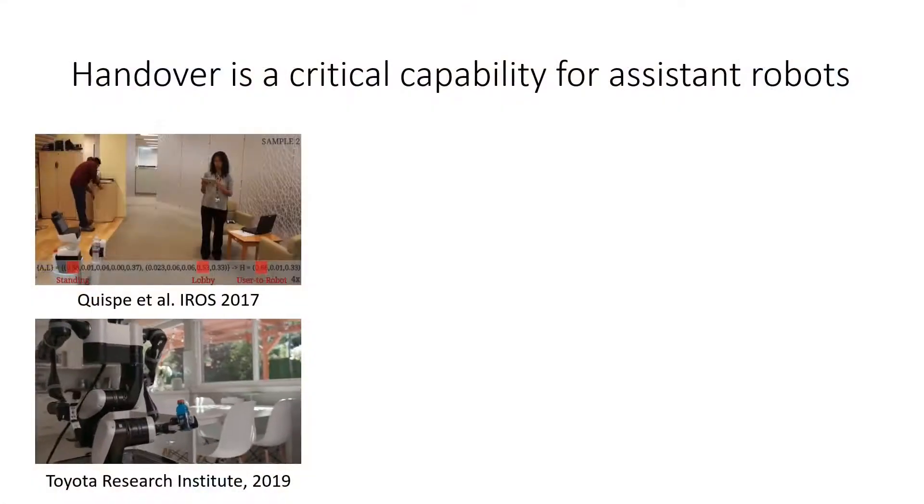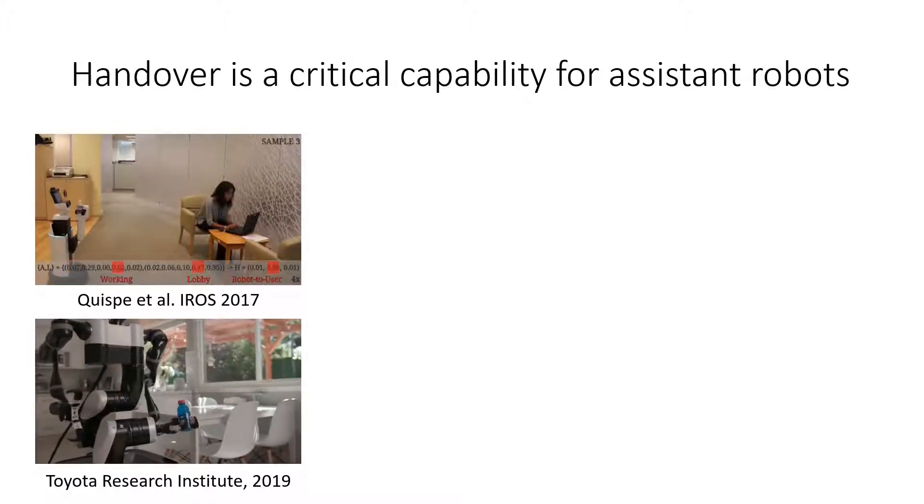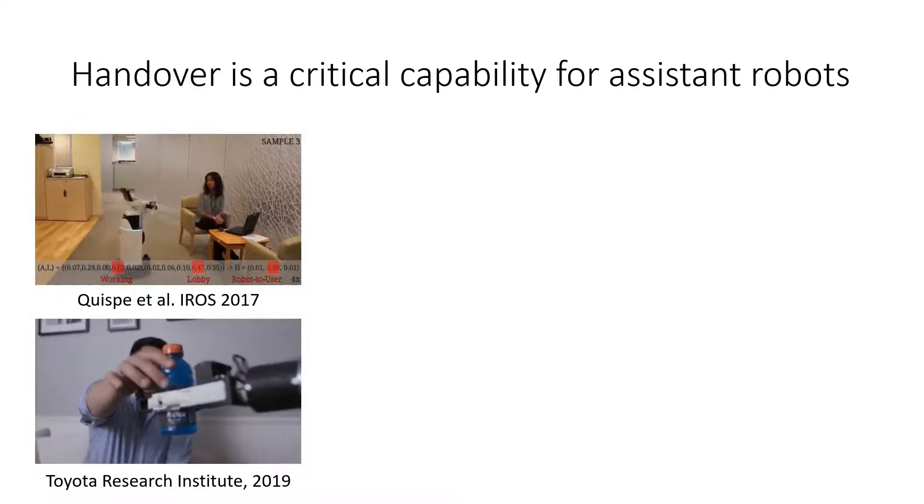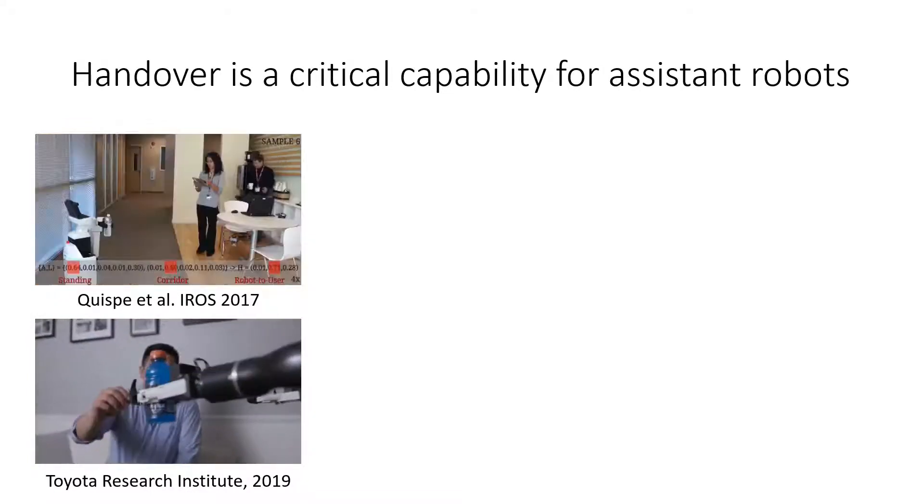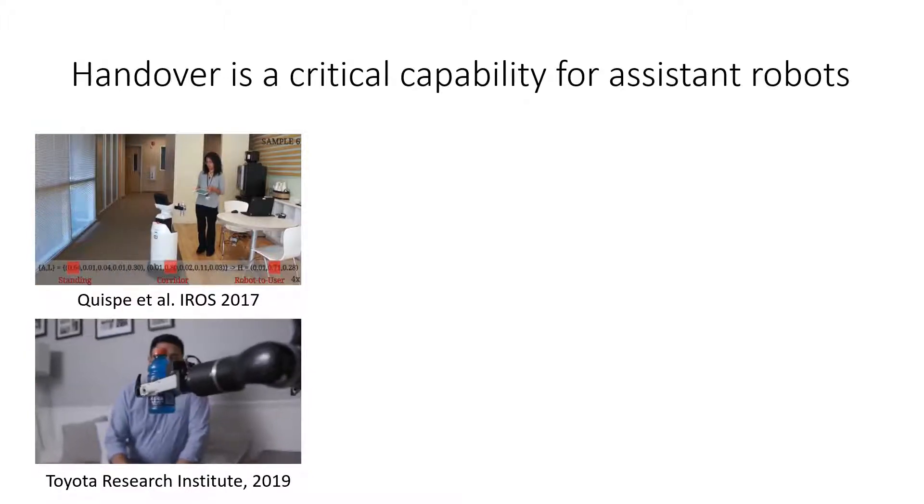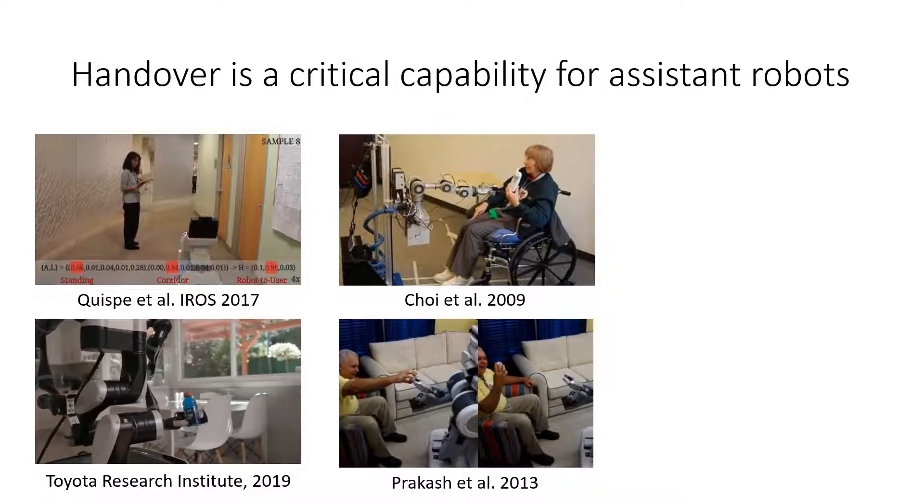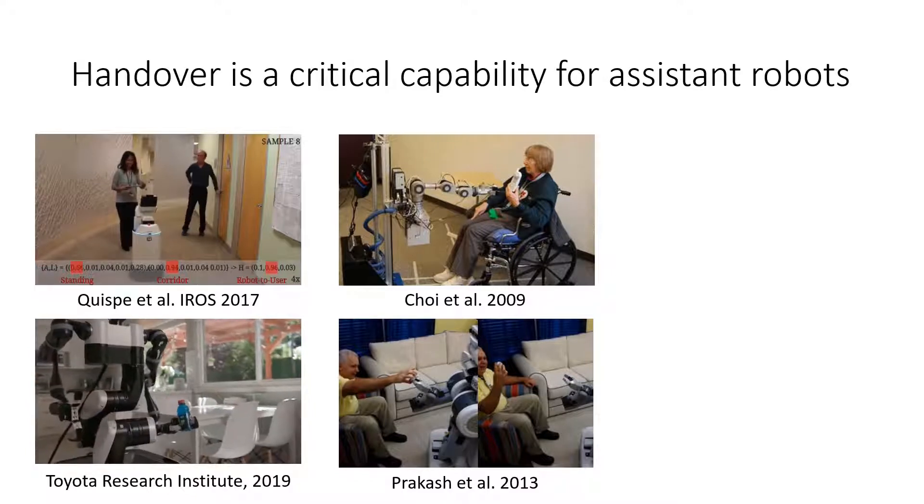The ability to handover objects to and from humans is critical for robots that are designed to assist people in different environments. For example, robots can bring convenience by fetching objects for humans at office or at home. They can also bring independence to older adults and people with mobility limitations at home by fetching various items for them.